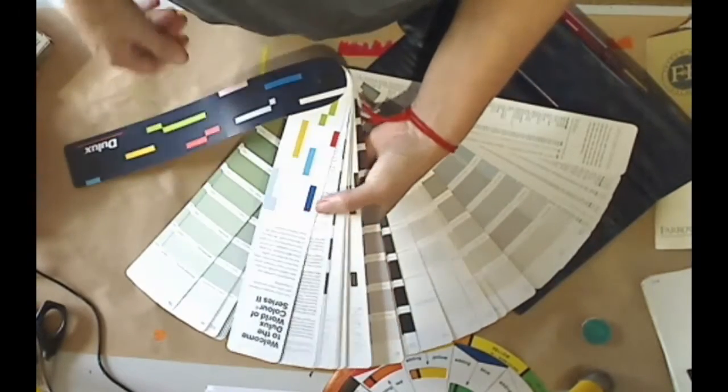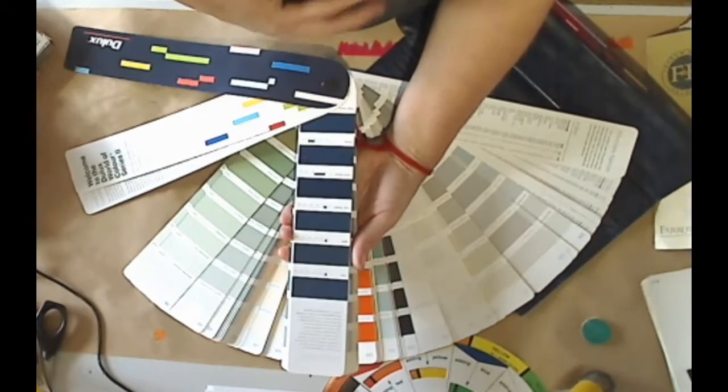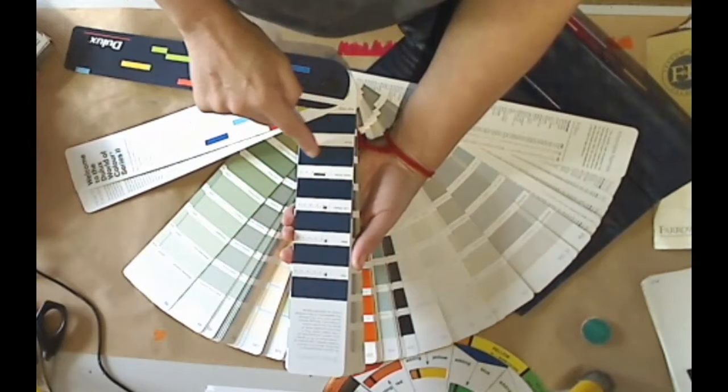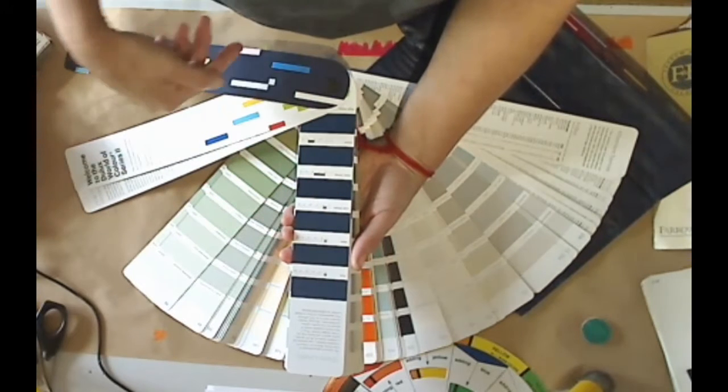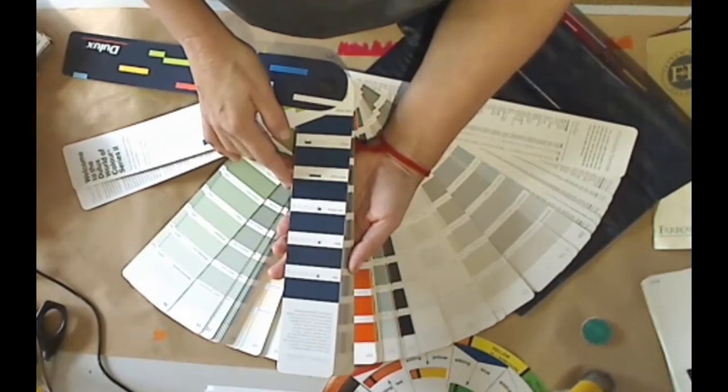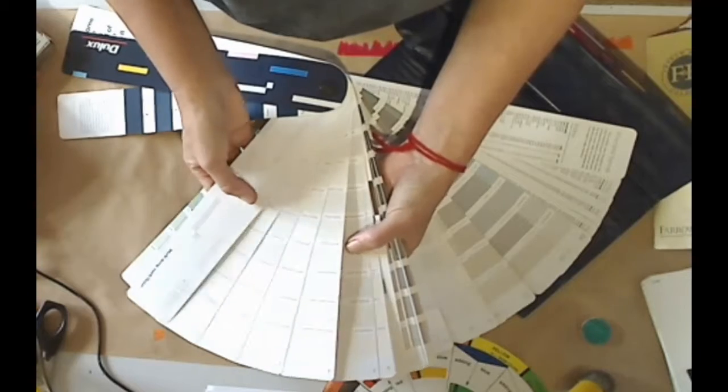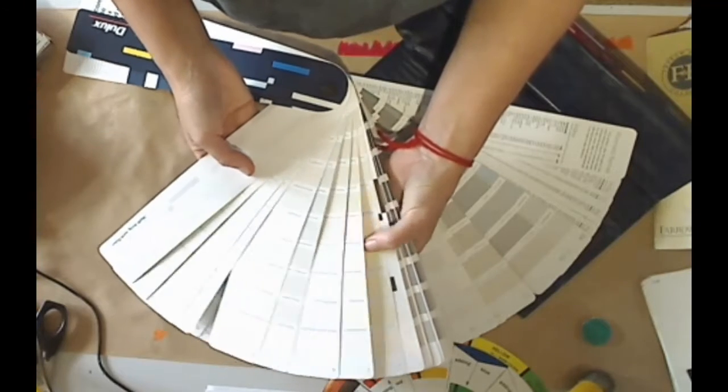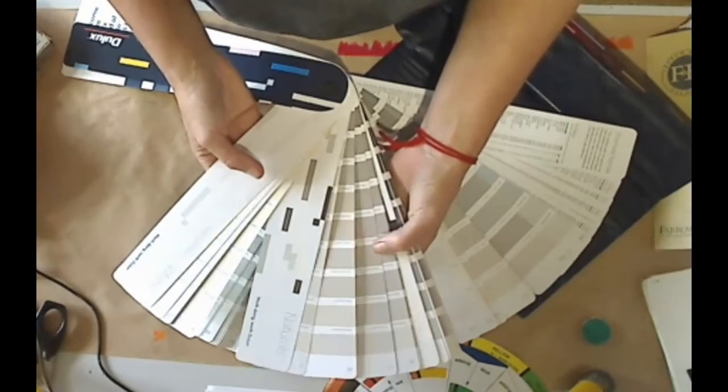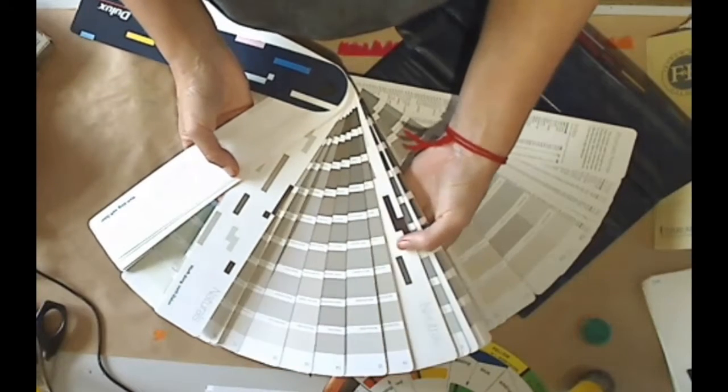This fandex also has a sheen level chart which will show you how the actual color will be affected by a sheen level, by a paint sheen level. And then we have the whites and the so-called naturals, which are beiges and tawny colors and greys, light greys.